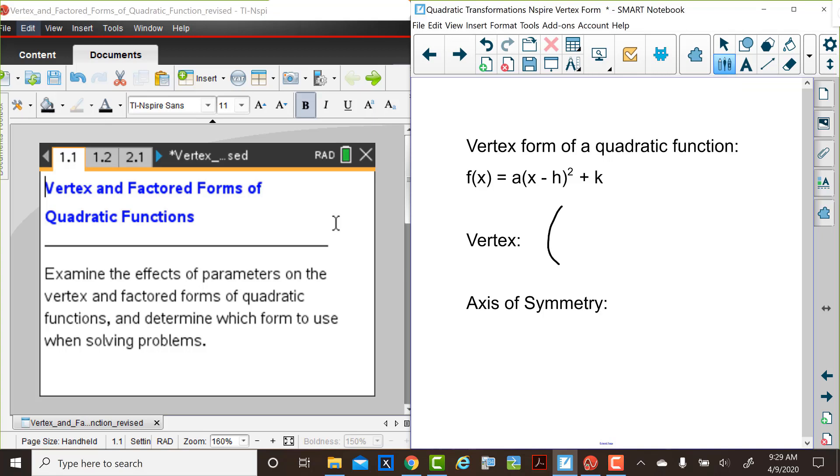The vertex is easily accessible from this form. It's the h value followed by the k value. The ordered pair (h, k) is the vertex of this parabola, and the axis of symmetry is the equation x equals the x value of the vertex, x equals h.